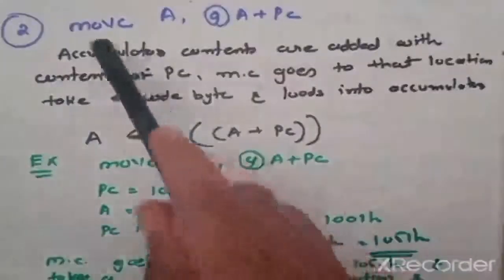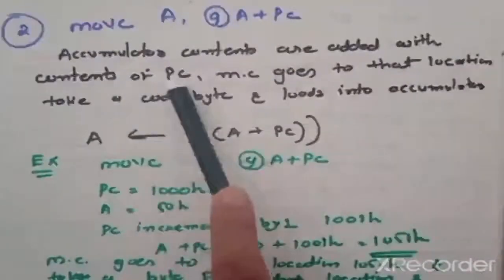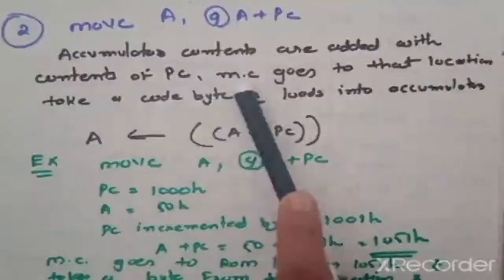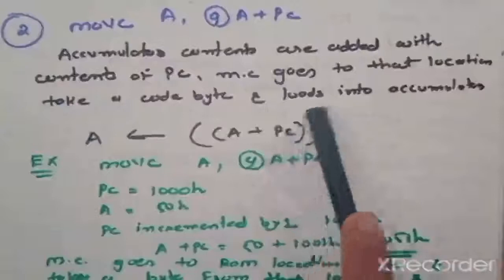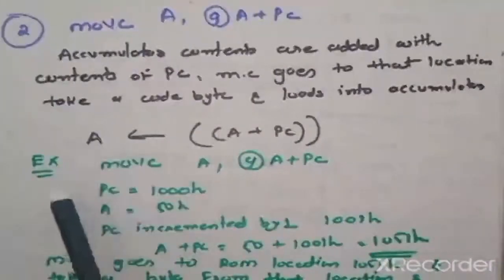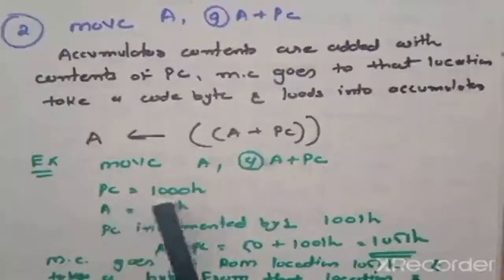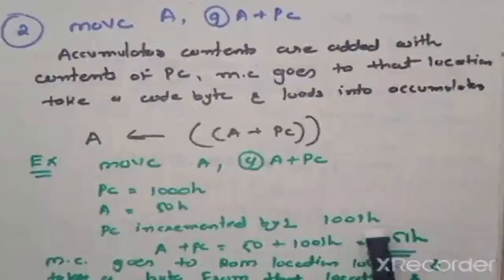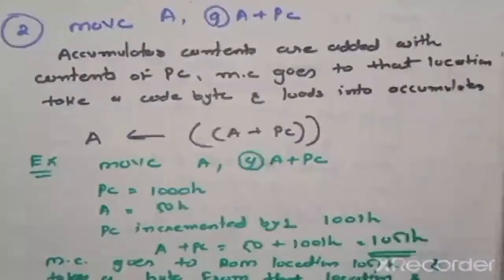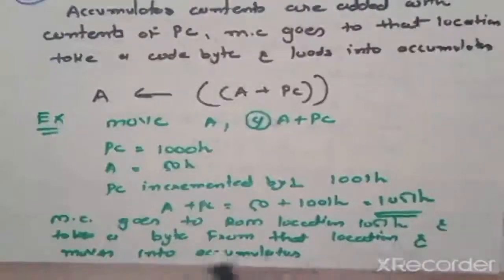Next instruction: MOVC A, @A+PC — accumulator content is added with content of PC (program counter); microcontroller goes to that location, takes a code byte, and loads it into accumulator. Example: content of PC is 100H, content of accumulator is 50H. Program counter is incremented by 1 to 1001H. So A plus PC = 50H + 1001H = 1051H. Microcontroller goes to ROM location 1051H and takes a byte from that location into accumulator.